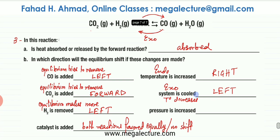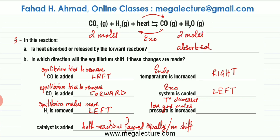The last part is that pressure is being increased. When you increase pressure, the less gas mole side is favored. In this particular reaction, there are two moles of gas in the reactants and two moles of gas in the products as well. So both sides have equal gas moles. There is no less gas mole side, meaning increasing pressure is not going to have any effect on this particular equilibrium.